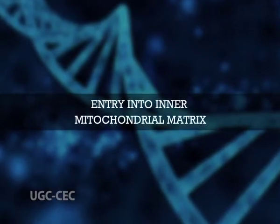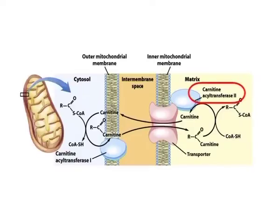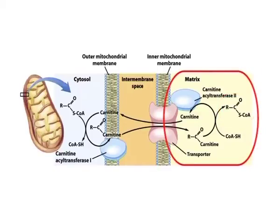In the third and final step of the carnitine shuttle, the fatty acyl group is enzymatically transferred from carnitine to the intramitochondrial coenzyme A by carnitine acyltransferase 2, located on the inner face of the inner mitochondrial membrane. This regenerates fatty acyl-CoA and free carnitine in the matrix. The fatty acyl-CoA can now be acted upon by the oxidative enzymes in the mitochondrial matrix.